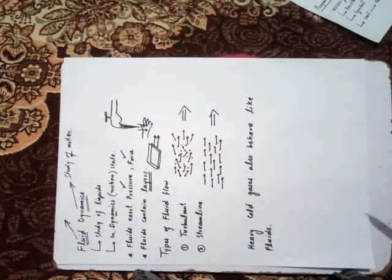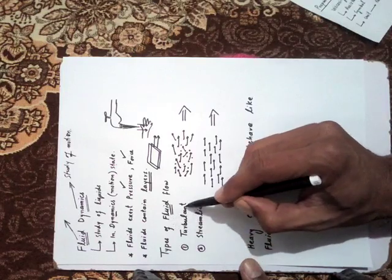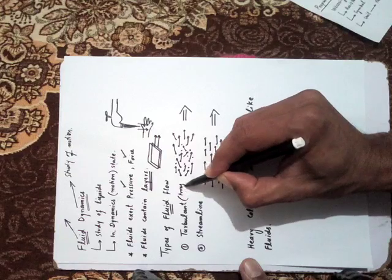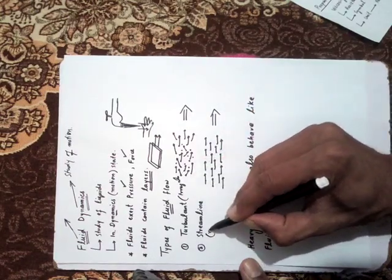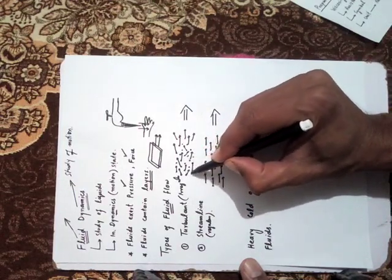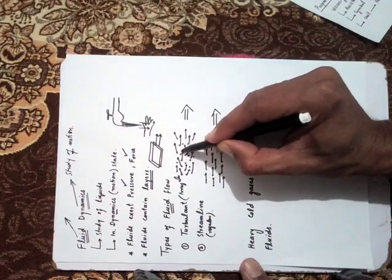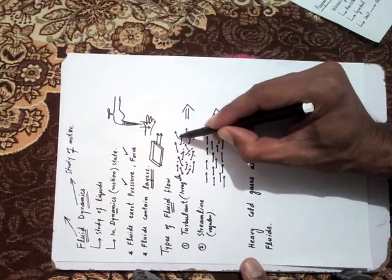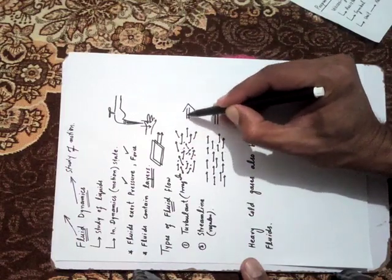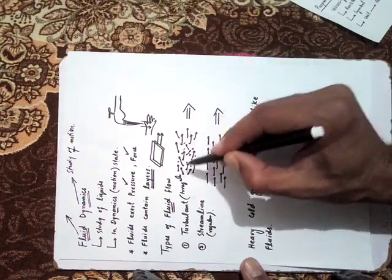There are two types of fluid flow: turbulent and streamlined. Turbulent means irregular, and streamlined means regular. In turbulent flow, the overall fluid moves in one direction, but each individual atom or molecule does not follow the same path — they move in different directions: up, down, right, left. So the individual direction of each molecule is not the same as the overall flow direction. This irregular movement is called turbulent flow.